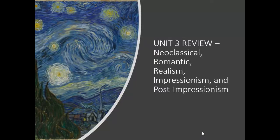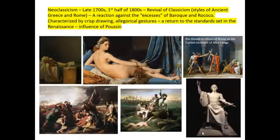Welcome to the Unit 3 review. We have five major styles to look at: Neoclassical, Romantic — covering the first half of the century — then in the middle of the 1800s we have the rise of Realism, which then gives birth to Impressionism and subsequently Post-Impressionism.